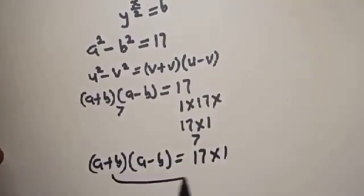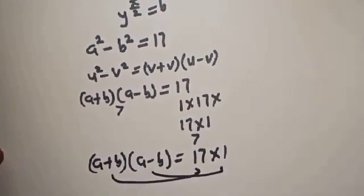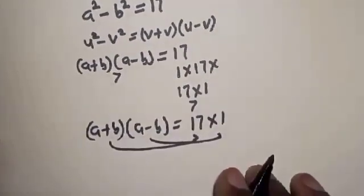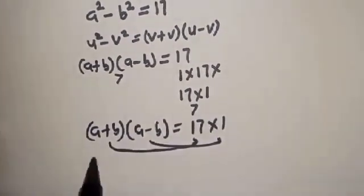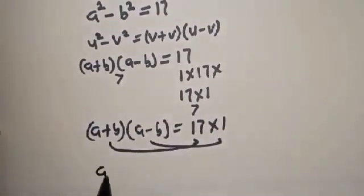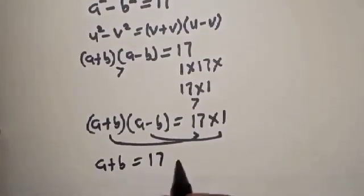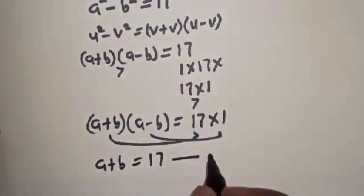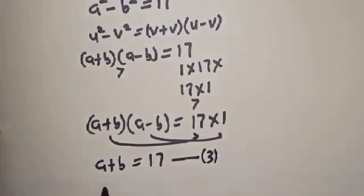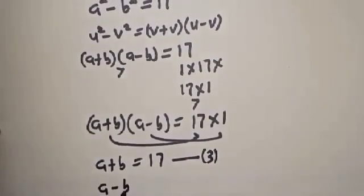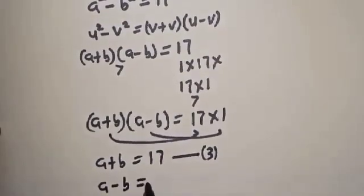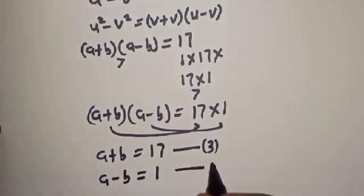Therefore we have (a plus b)(a minus b) equal to 17 times 1. This gives us equation 3: a plus b is equal to 17, and equation 4: a minus b is equal to 1.